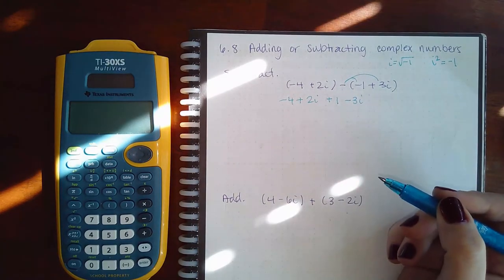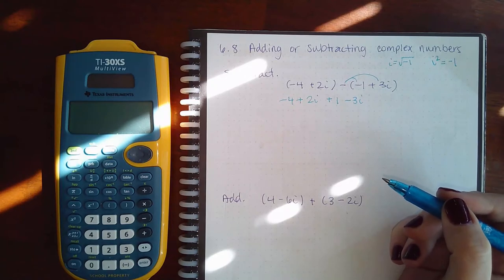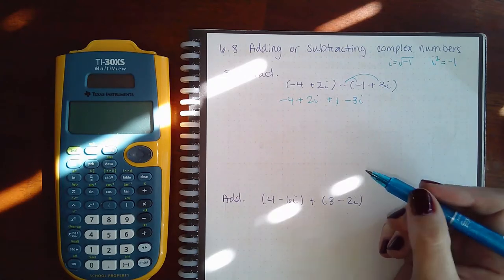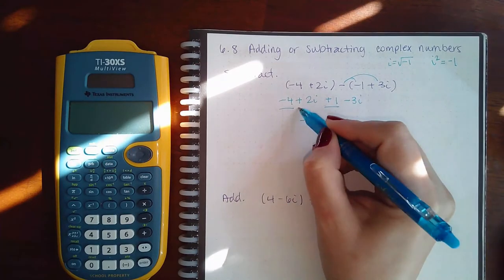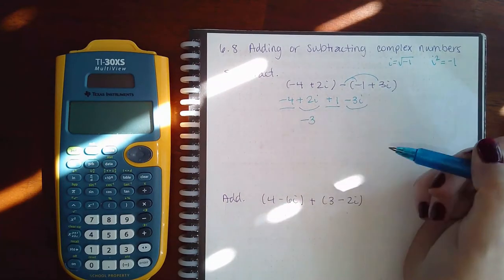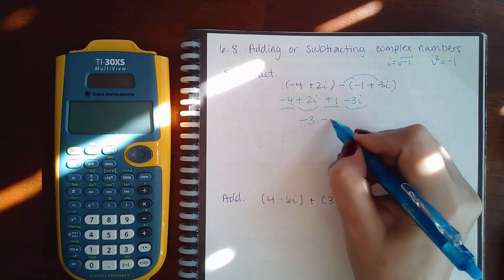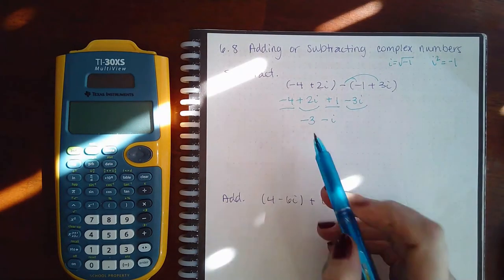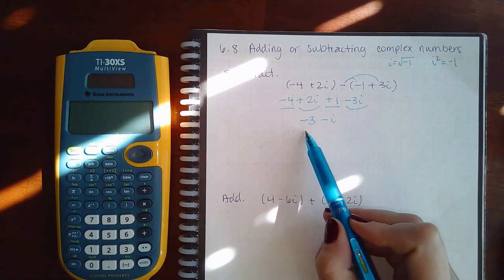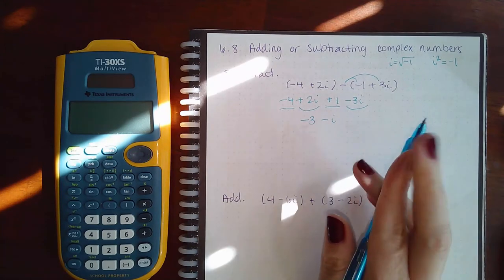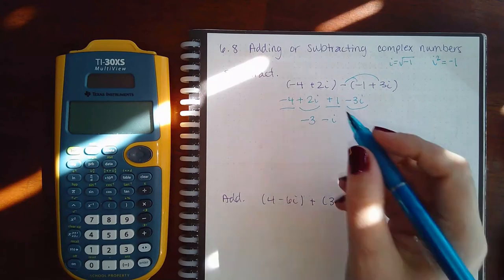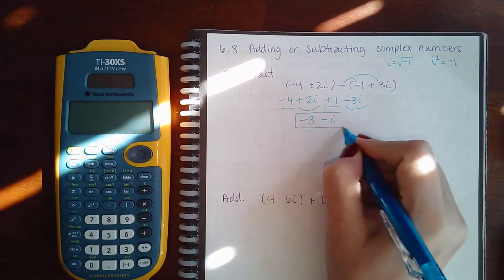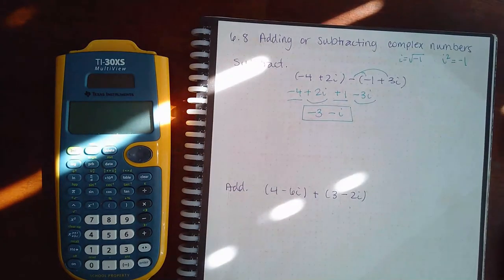You can combine your real parts together and your imaginary parts together. Negative 4 plus 1 is negative 3, and 2i minus 3i is negative i. You cannot combine a real number and imaginary number together by adding or subtracting. You can multiply them, but you can't add or subtract them. So that stays as the response.